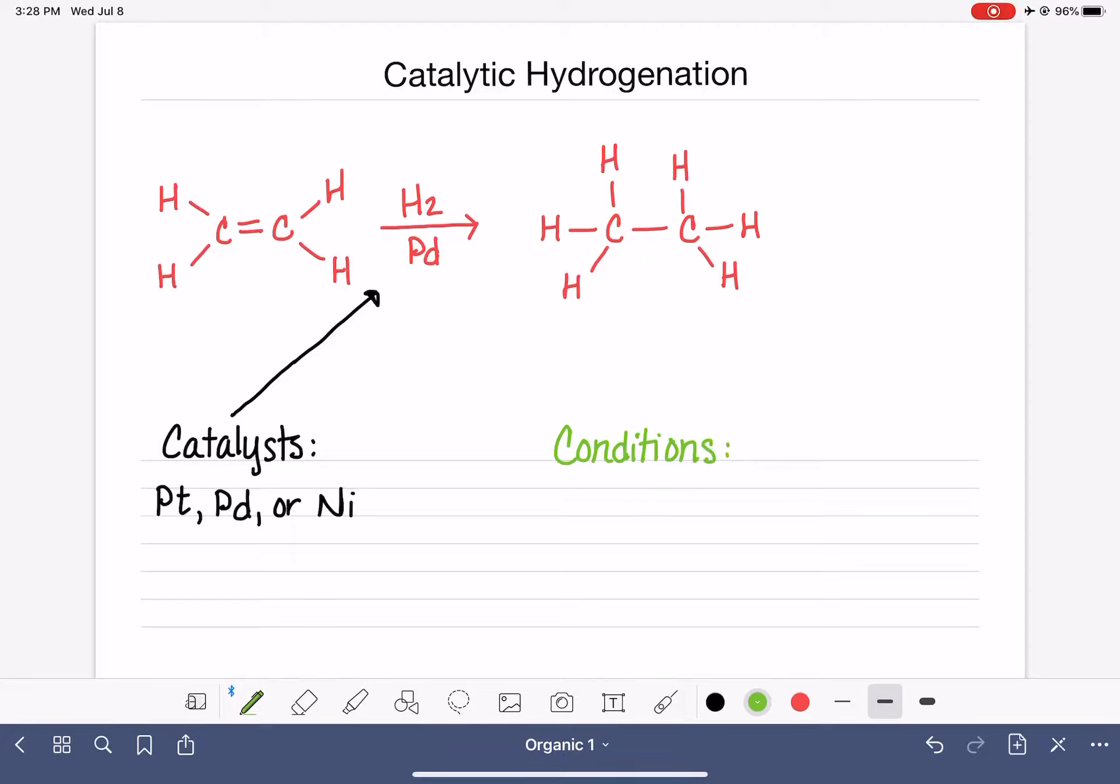First of all, Markovnikov's rule doesn't apply to this reaction. We use Markovnikov's rule to help us predict where a hydrogen will go in an addition reaction. In this particular reaction, because both carbons are getting a hydrogen, we don't need a rule to help us decide where the hydrogen will go. There is no carbocation formed in this reaction, which means that we have no rearrangement of our carbon skeleton. No changes to the carbon skeleton.